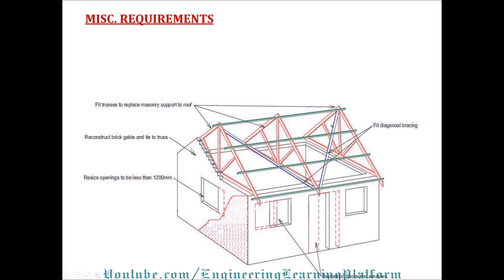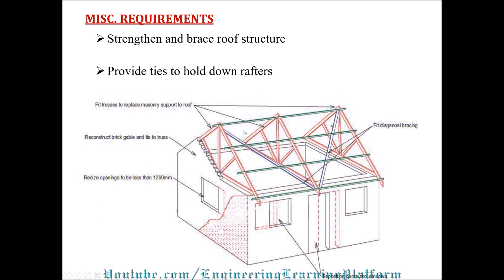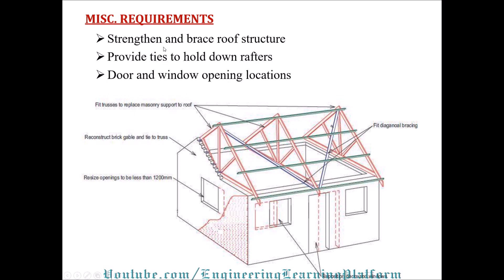Miscellaneous requirements are shown on the figure. We have to strengthen and brace the roof structure to protect it against wind thrust from uprooting the roof. We have to provide ties to hold down the rafters — the ties shown here protect the structure from uprooting.